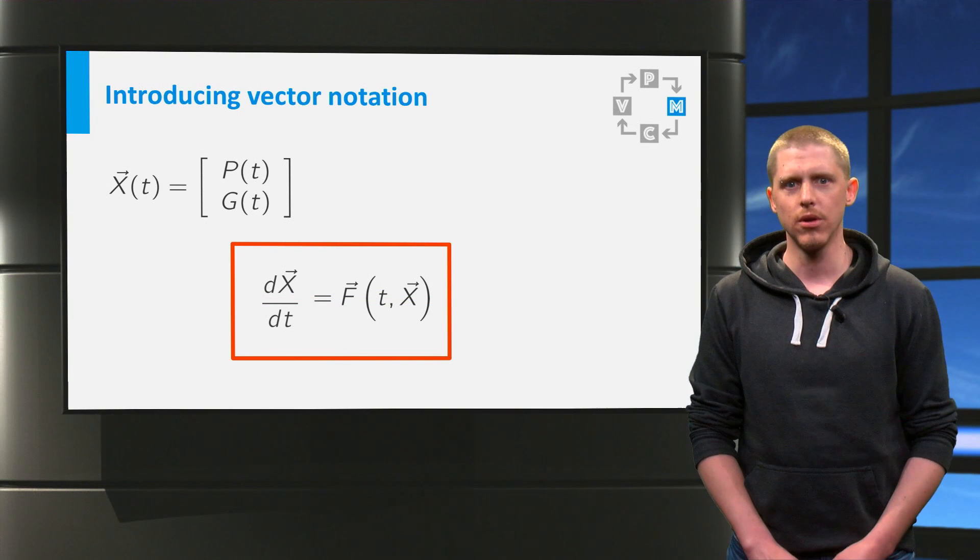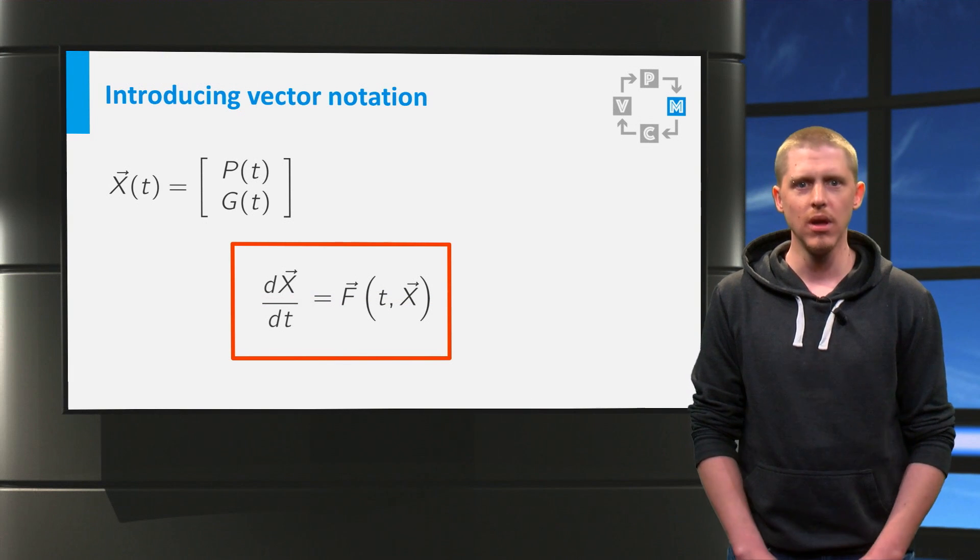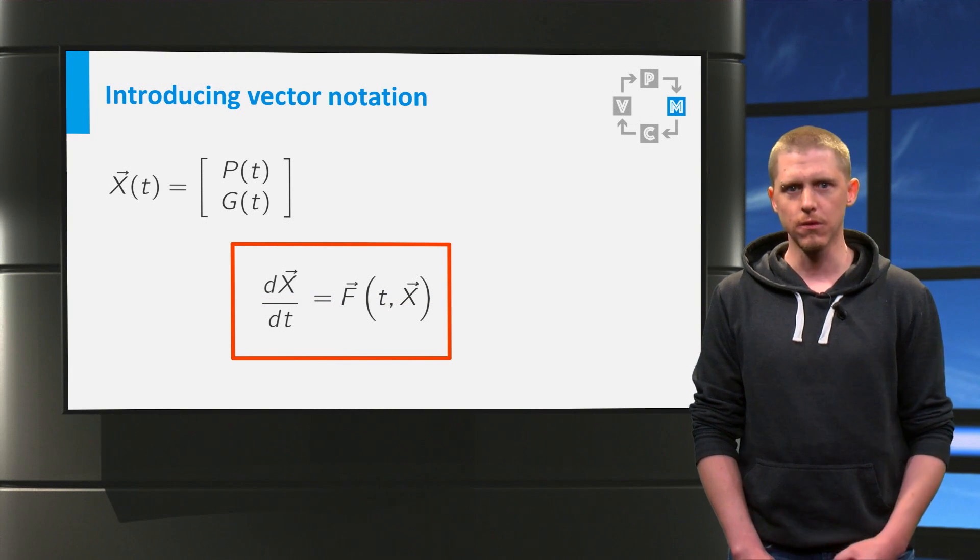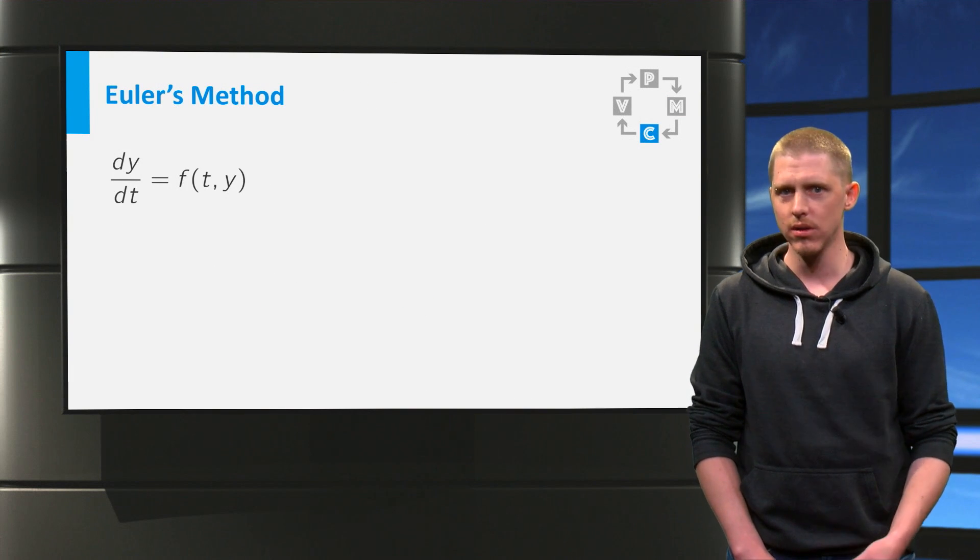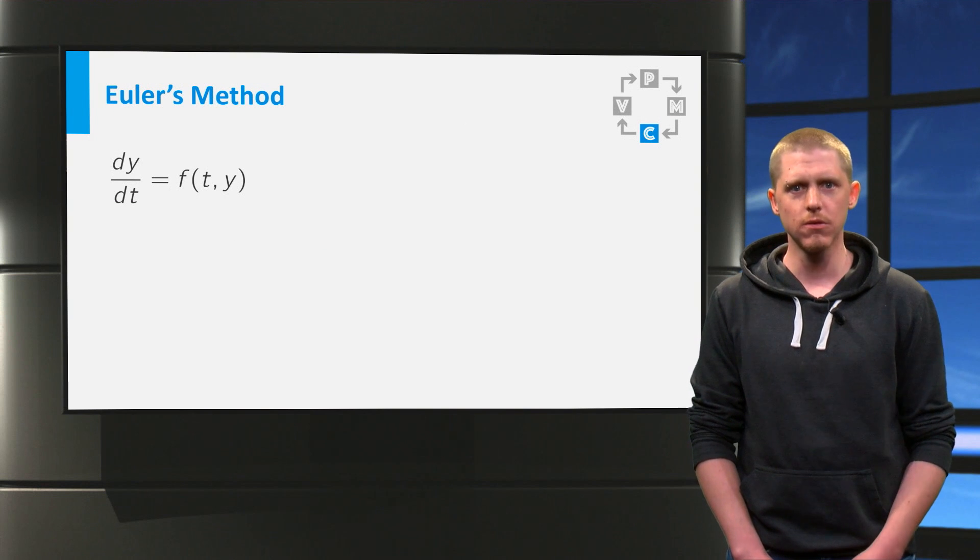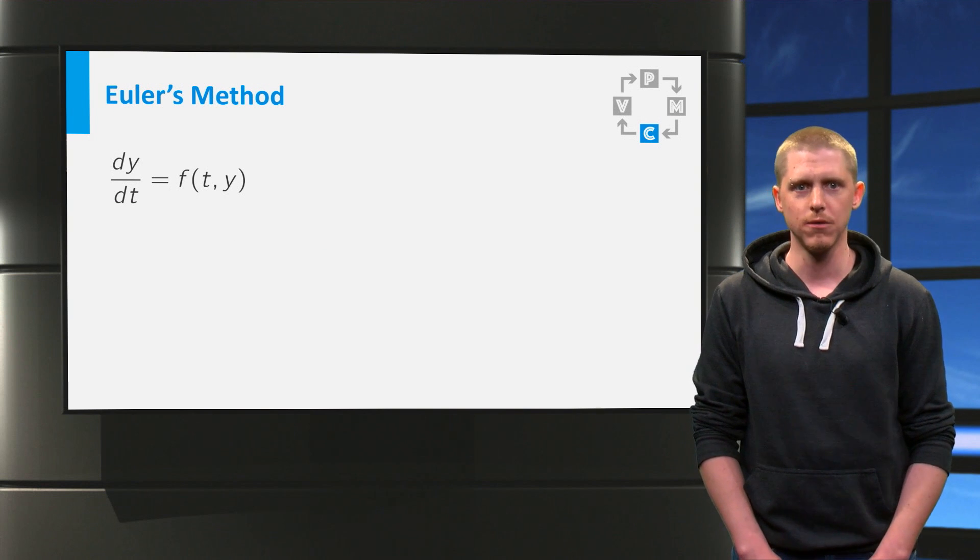In the remainder of this video, we are going to use this general form and formulate Euler's method for vector differential equations. Before you do this, let us repeat Euler's method for a differential equation for a scalar function y of time t.